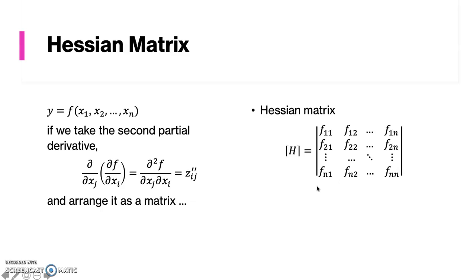According to Young's theorem, the derivative of a function with respect to xi then xj is just equal to taking the first derivative with respect to xj then xi. In other words, fij is equal to fji.